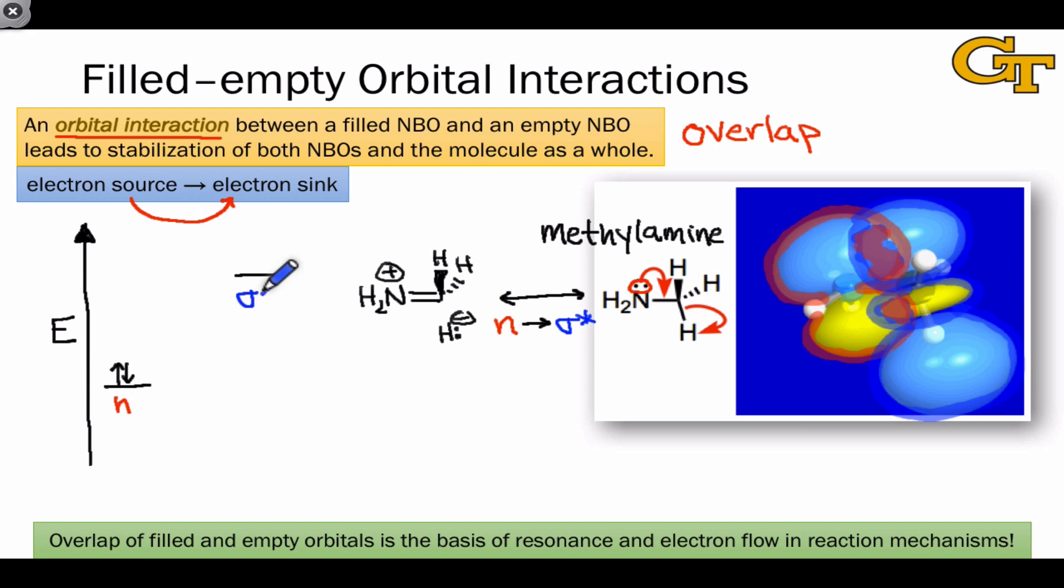We can represent the non-bonding lone pair orbital on nitrogen and the sigma antibonding orbital of the CH bond on an orbital energy diagram like this. As we expect, the sigma star orbital is higher in energy than the non-bonding orbital. The interaction between these two orbitals results in a lowering in the energy of the filled orbital. Notice that this is a stabilizing effect since its energy is going down and it's filled, and a raising of the energy of the antibonding orbital.